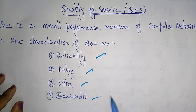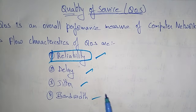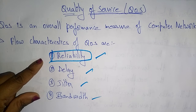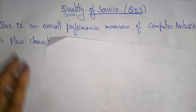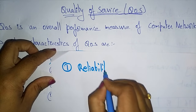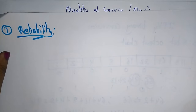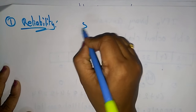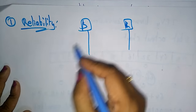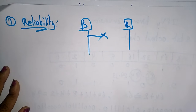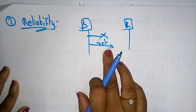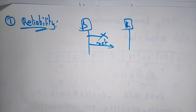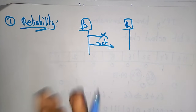Let's see what reliability is. Reliability is the first flow characteristic of quality of service. If a packet gets lost or an acknowledgement is not received — the sender is sending the message and the receiver is receiving the message — suppose the packet is lost or no acknowledgement is received, then you need to retransmit. This retransmission of data decreases the reliability of the system.